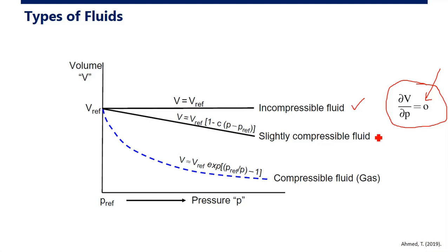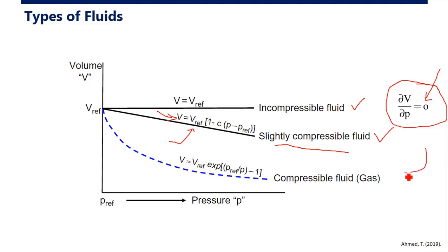For slightly compressible fluid, there is a change in volume: if we increase the pressure, the volume will decrease following a certain trend. This is the general equation for slightly compressible fluid. For compressible fluid — gas — the trend is different; the volume changes significantly as a function of pressure.